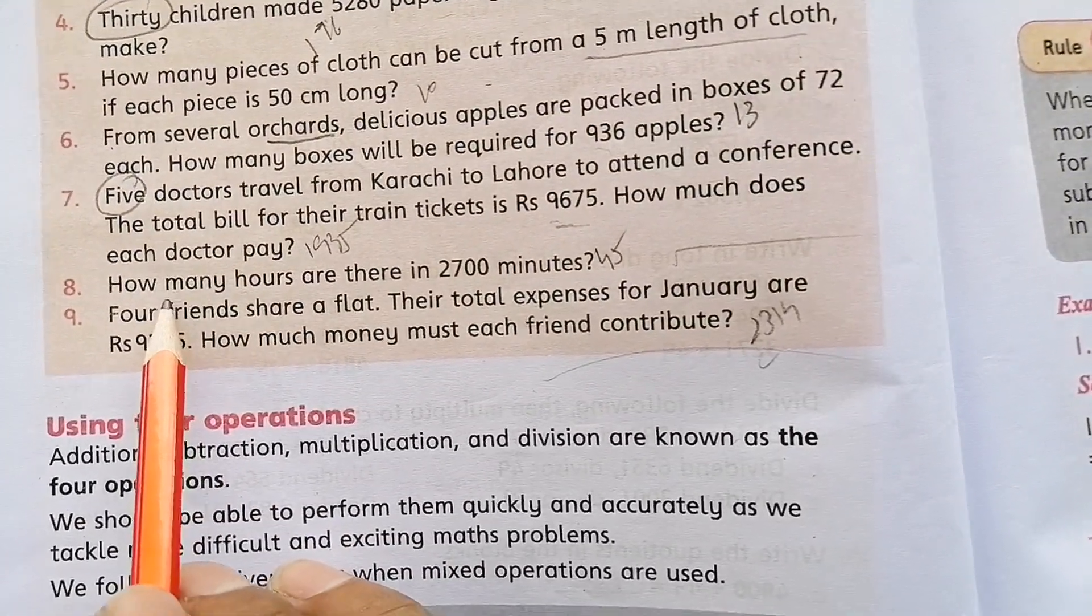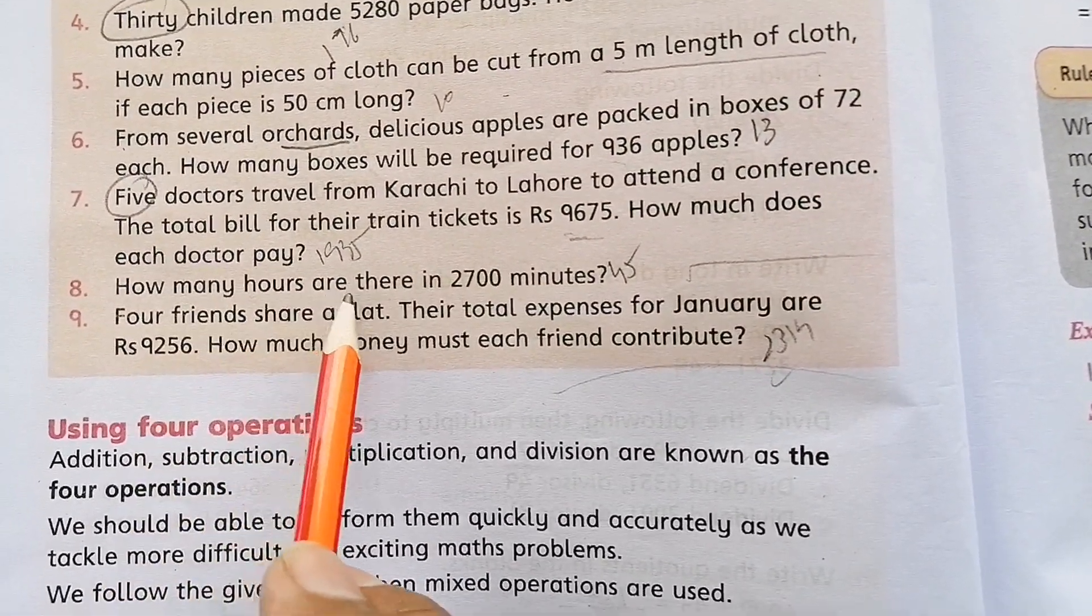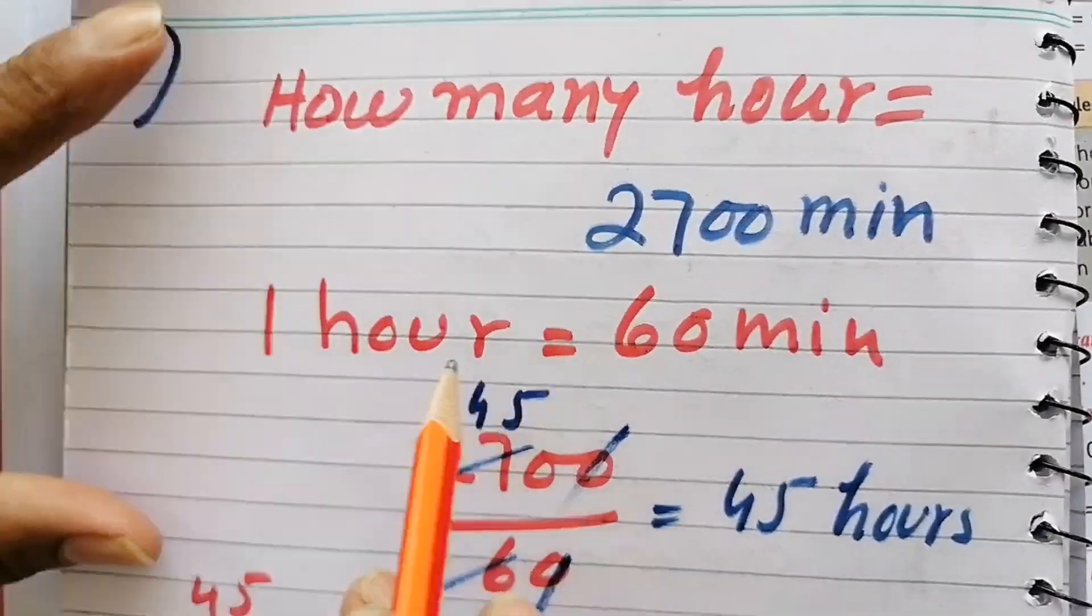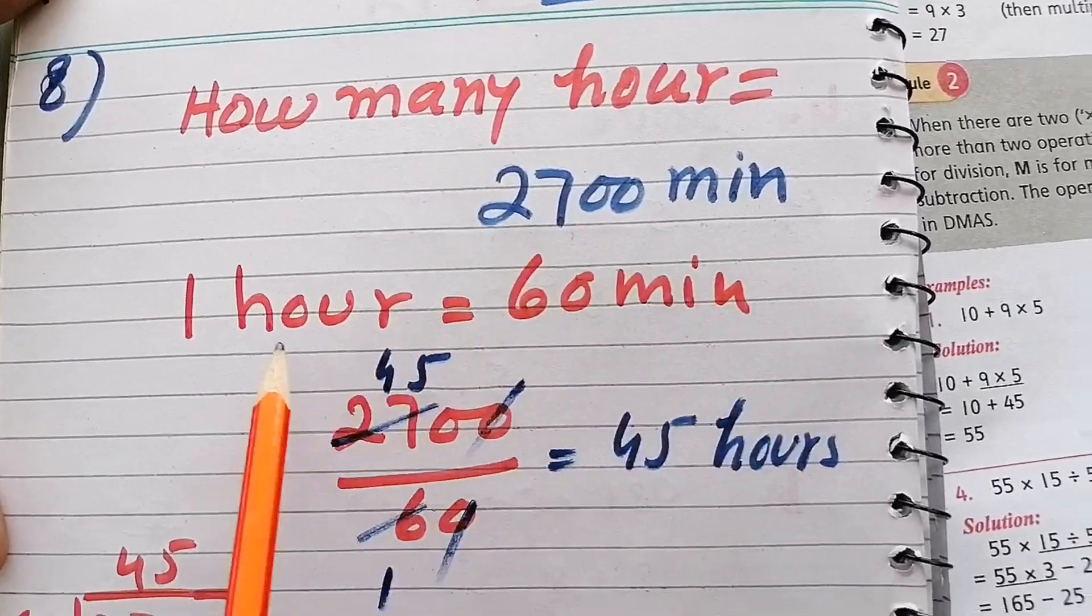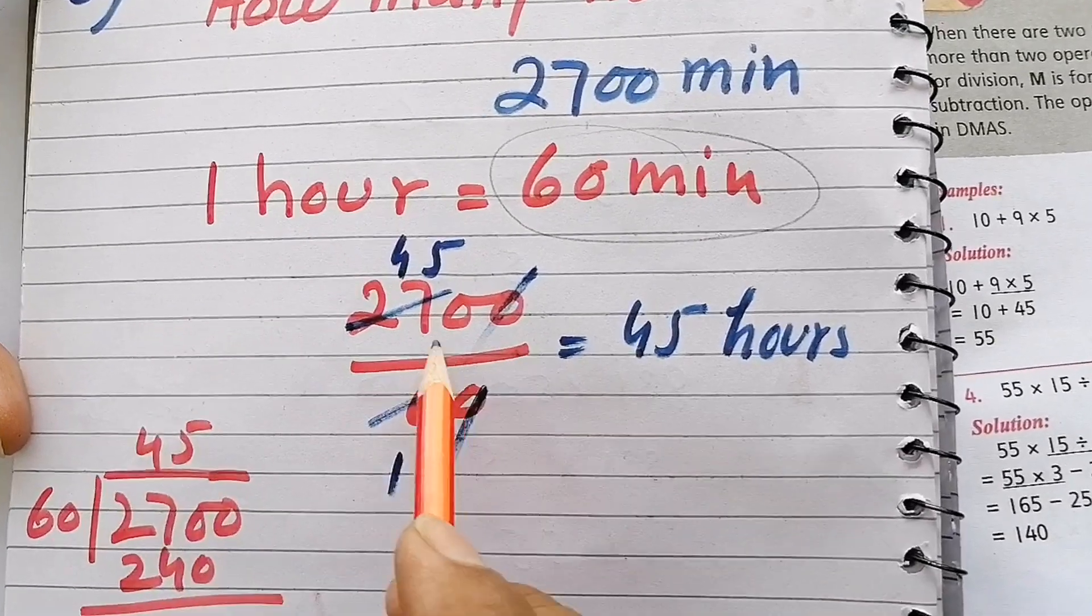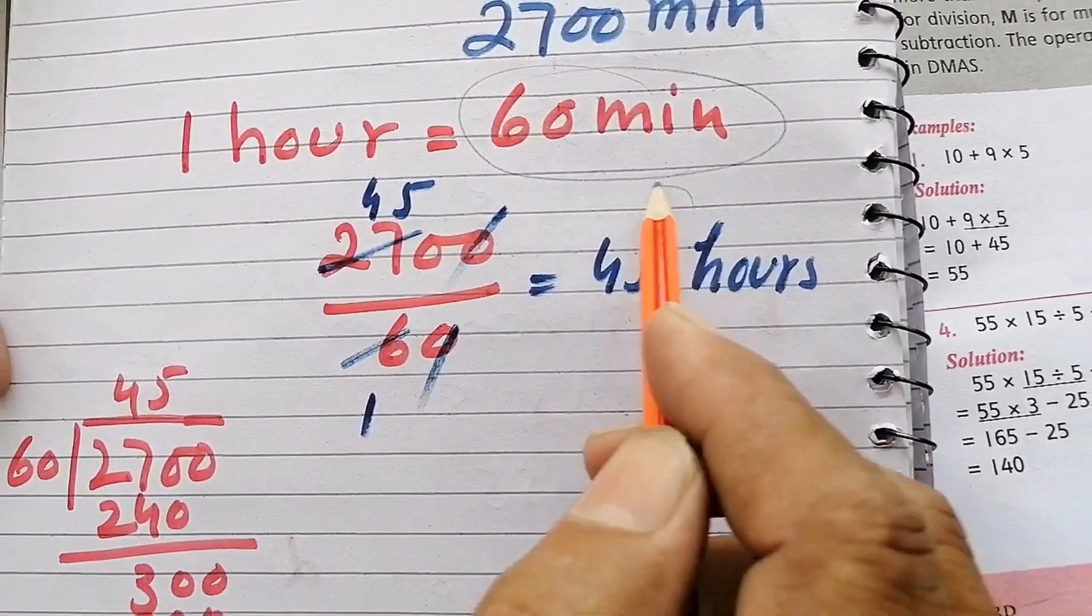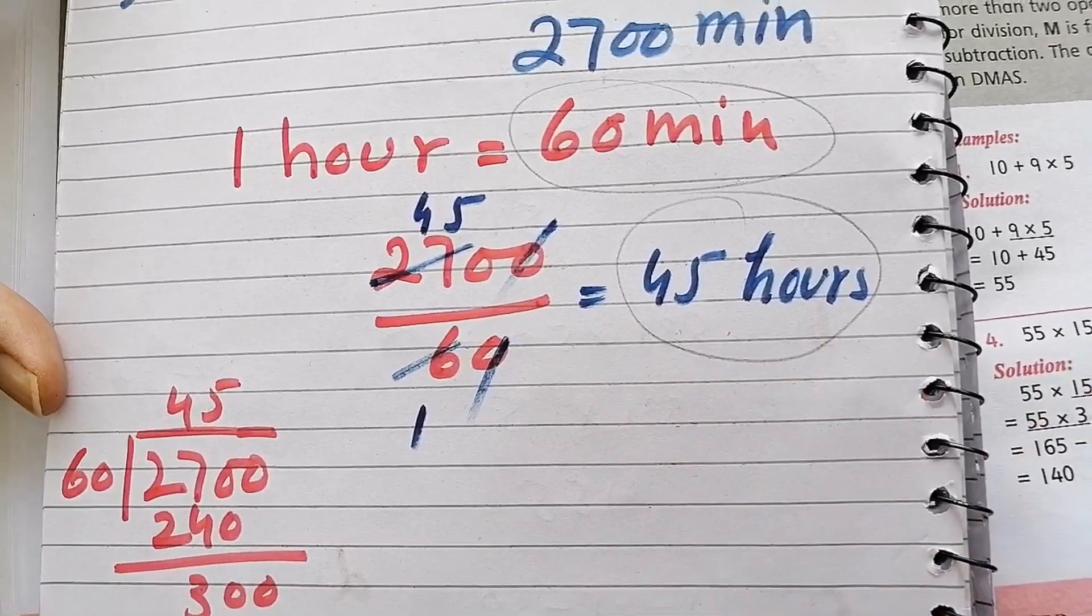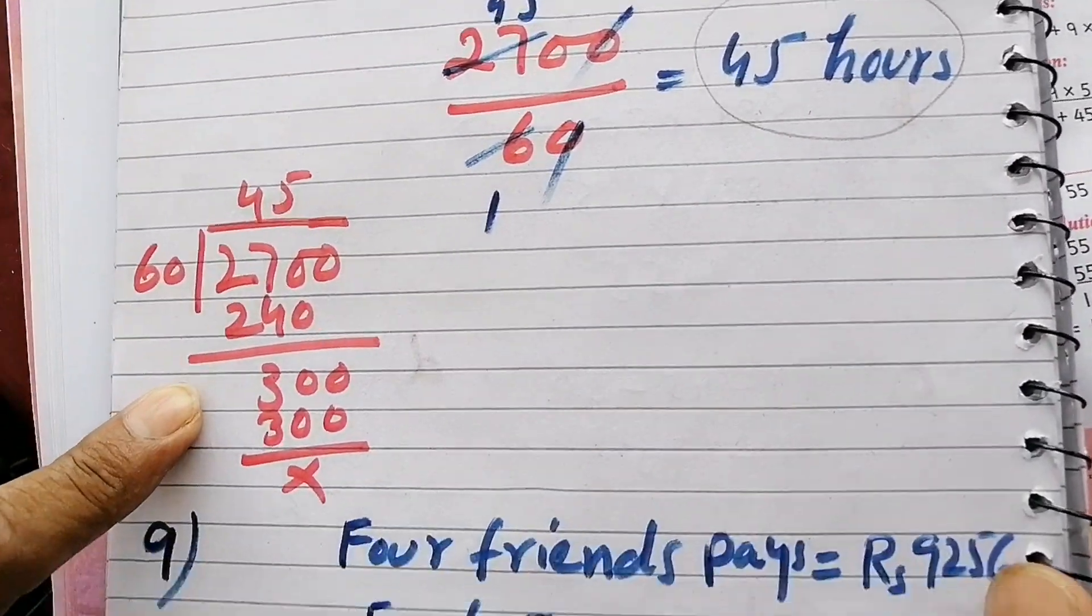Second to last question: How many hours are there in 2,700 minutes? Divide 2,700 by 60 to get 45 hours.